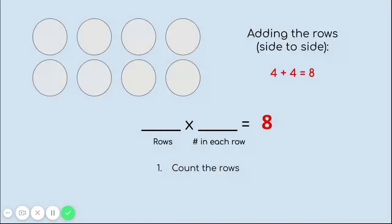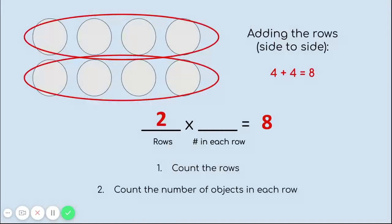Our first step when writing a multiplication sentence is to count the rows — rows go side to side. When we count our rows, we can see there are 2 rows going across, so we put a 2 in the first blank. Our next step is to count the number of objects in each row. Counting across, I see 1, 2, 3, 4 objects in each row. So now I have a multiplication sentence that says 2 rows times 4 objects equals 8. This is the same thing as writing 4 plus 4 equals 8, but using multiplication instead.